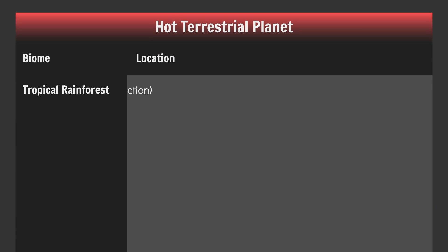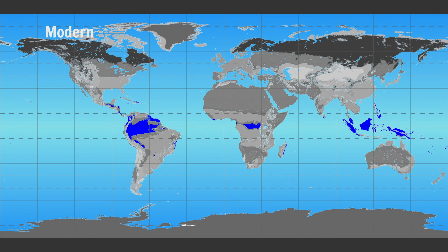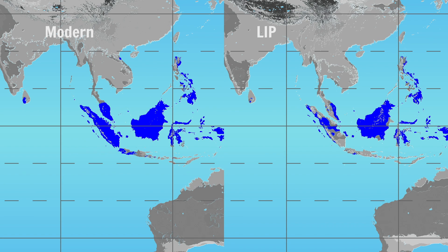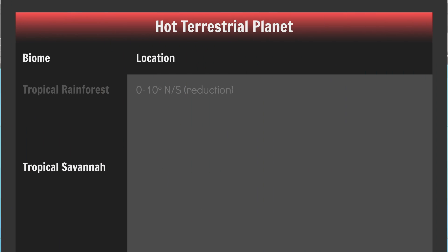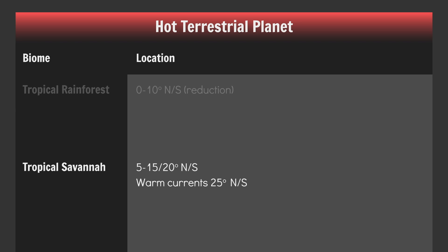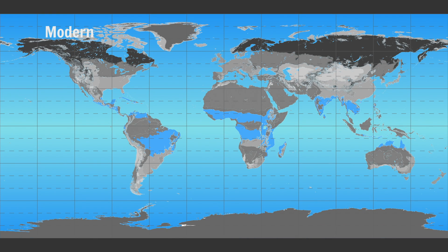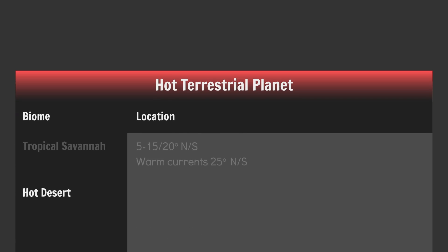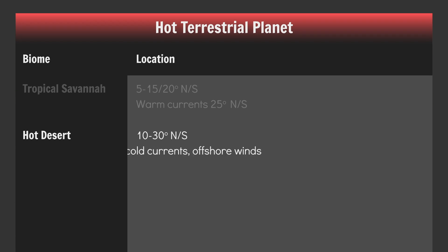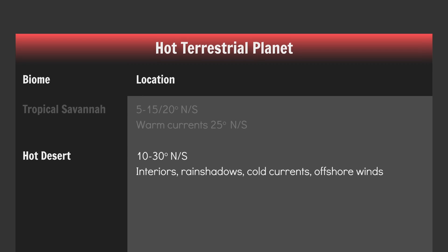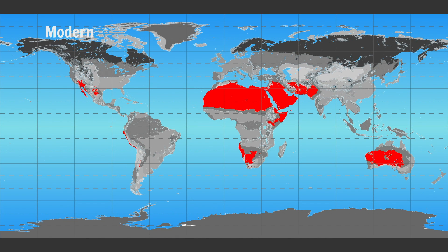Place your tropical rainforests between 0 and 10 degrees north and south, but with a significant reduction in overall coverage — check out the difference on Sumatra. Place your tropical savannahs out to about 15 or 20 degrees north and south; along warm current coasts go out to about 25 degrees north and south. Place your hot deserts between about 10 and 30 degrees north and south in continental interiors, rain shadows, and in regions affected by cold currents and/or offshore winds.